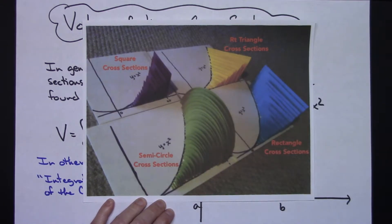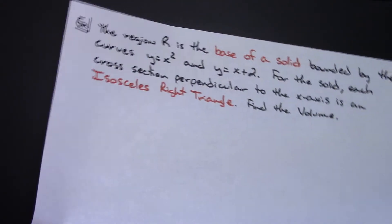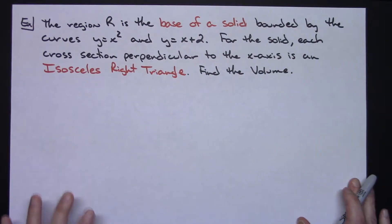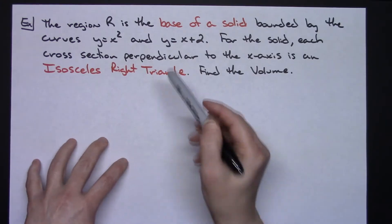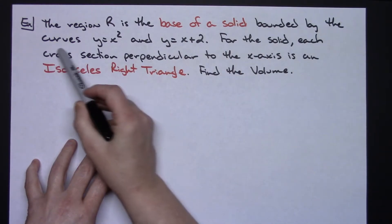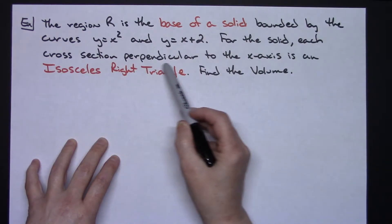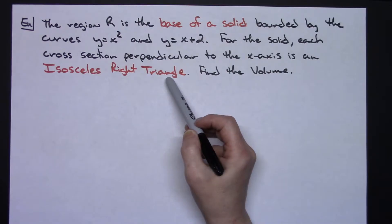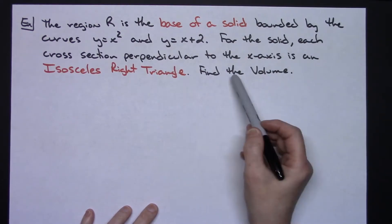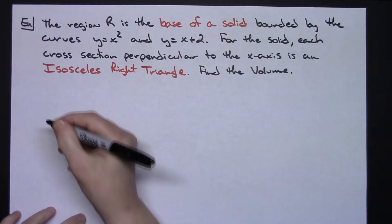The cross section I choose can be pretty much any geometric shape that I'm able to calculate the area for. For our first example, let's say we've got a region R — the region R is the base of a solid, bounded by the curves y equals x squared and y equals x plus 2. For the solid, each cross section perpendicular to the x-axis is an isosceles right triangle, and it's asking us to find the volume. The first thing you probably need to do is do a little sketch.